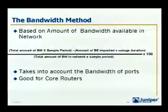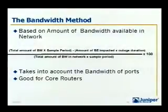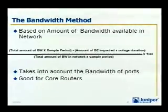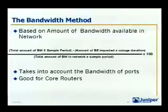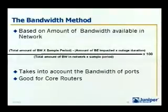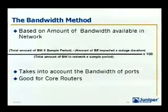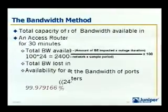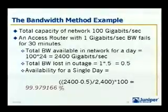The port method is good if you have customers with almost the same kind of bandwidth paying the same amount of money, which is usually the dial-up case. But when you're talking about the core of the network, the other way to measure availability is using bandwidth. You take whatever bandwidth you have in the core, figure out the total bandwidth, determine the uptime for all that bandwidth, and divide it by the total it should be available for. This method is pretty good for core routers or customers with large dedicated access.